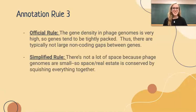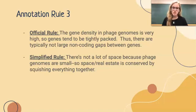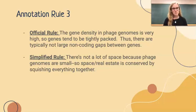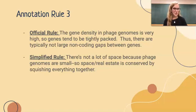The third rule touches back on the second one and reads: there's not a lot of space because phage genomes are so small. Space or real estate is conserved by squishing everything together. The real estate of the phage genome is pretty scarce, so genes are going to be squished together very tightly just to conserve as much space as possible. This is why, like in rule two, you'll have a little bit of overlap.